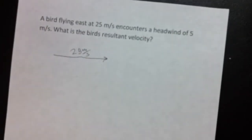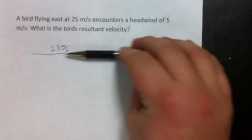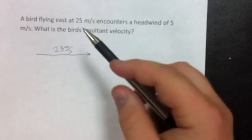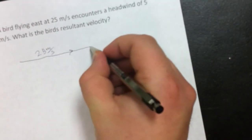Okay, some of you have asked the question in class, what is a headwind? Well, a headwind is simply opposite, directly opposite of the object flying. So a bird flying east at 25 meters per second encounters a headwind of 5 meters per second. The headwind is going to be directly opposite of this vector.